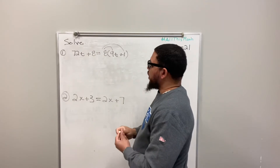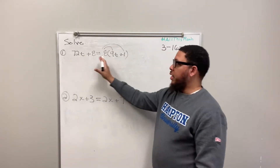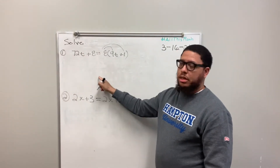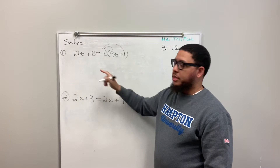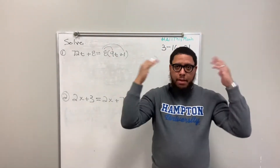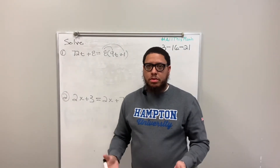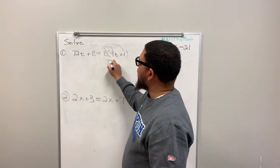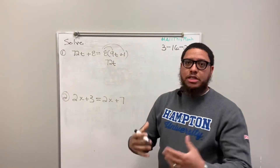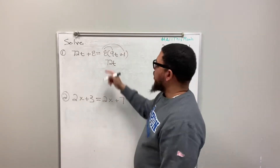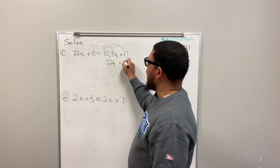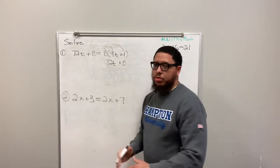On the right-hand side of this equation, because the equation has a left side and a right side separated by the equal sign, I'm going to do 8 times 9. I know 8 times 9 is 72, so that becomes 72t. Then I do 8 times 1, which is just 8. And now the parentheses are gone.